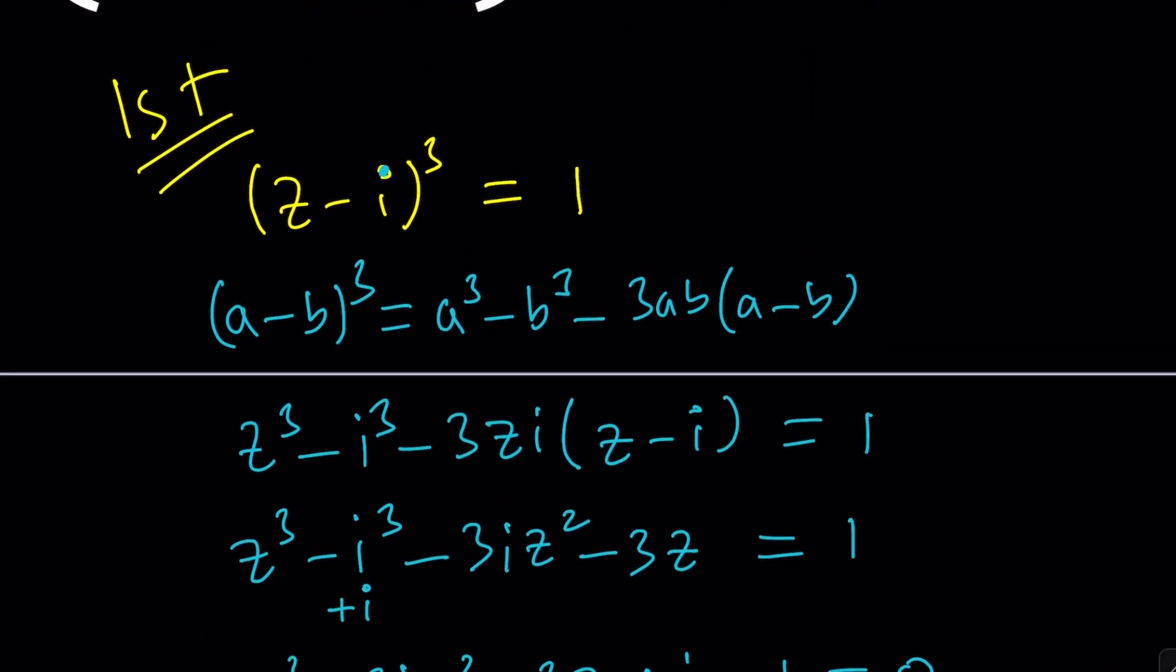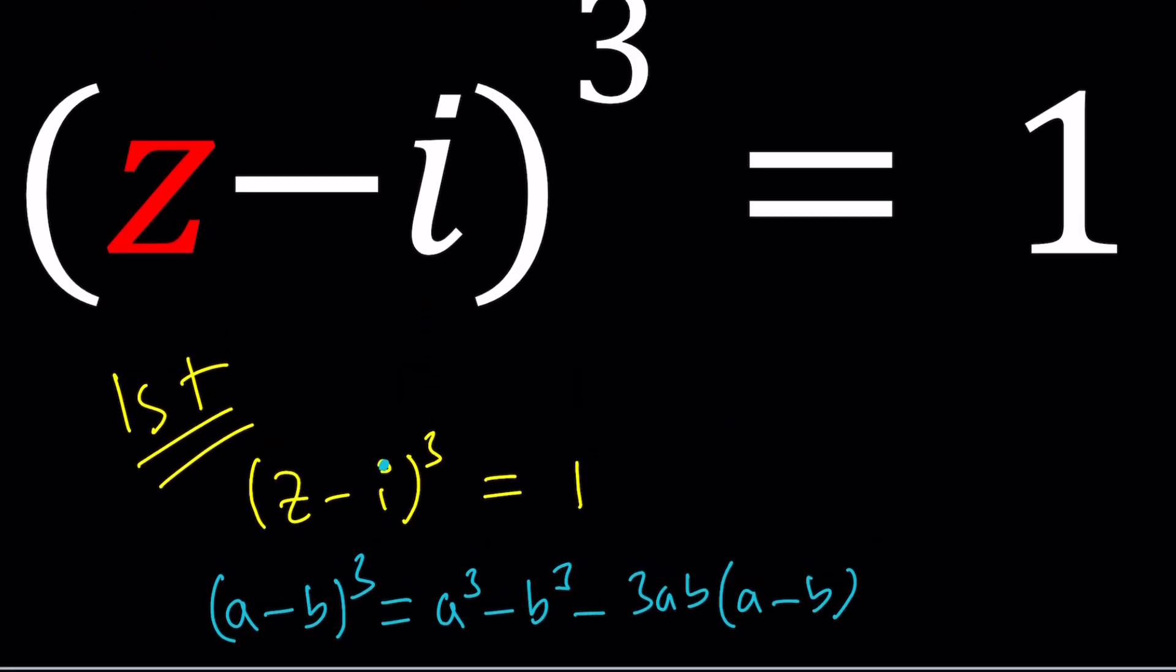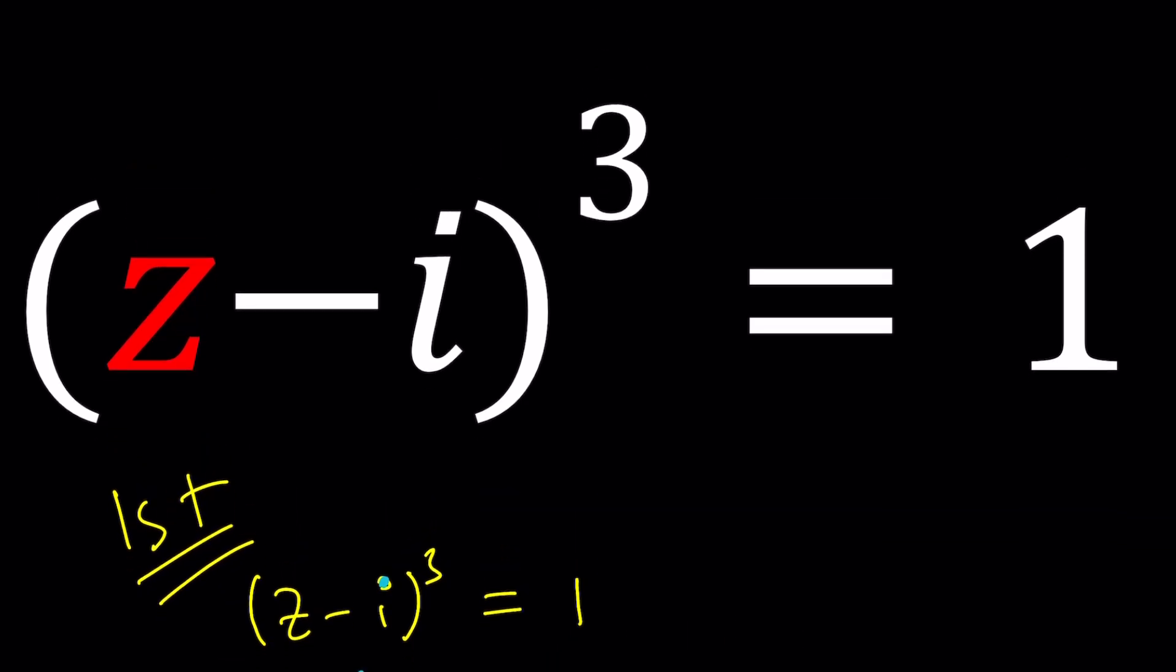Well, here's the thing. If you just replace Z minus I with W, you will get the same thing. So we did all this work for nothing. Well, anyways, that's how the cubic formula works. But in this case, there is no need to use it. So let's go ahead and use something else.